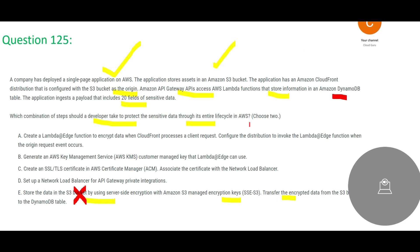That is not how it works in real time — you also have to do something at all places, so that option will not work. Option D suggests setting up a Network Load Balancer for API Gateway private integrations. However, a Network Load Balancer is a load balancing solution, not a security solution.